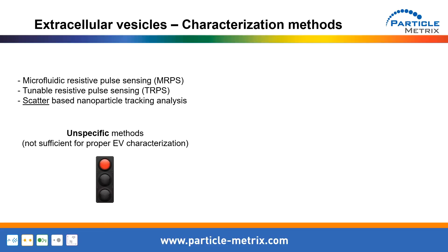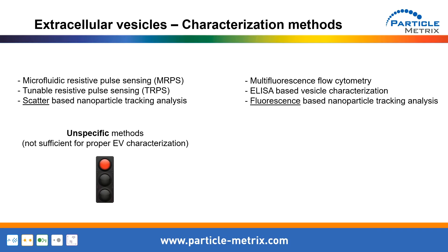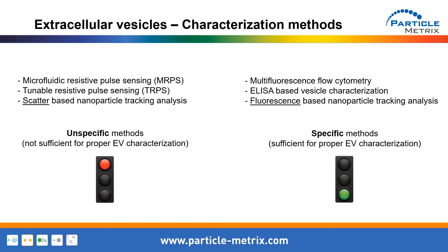However, these methods are pretty unspecific and not sufficient for a comprehensive EV characterization. They are missing information such as protein composition, the existence of surface markers, and the origin of the biological nanoparticle. On the other hand, methods like flow cytometry, ELISA-based assays, and fluorescent-based nanoparticle tracking have been shown to be a proper tool for gaining specific information using selective antibodies.